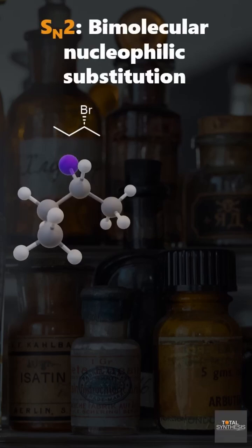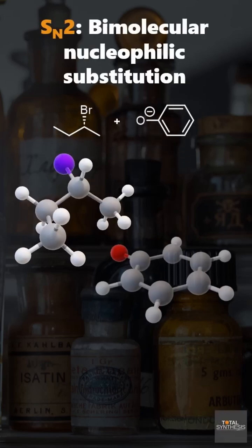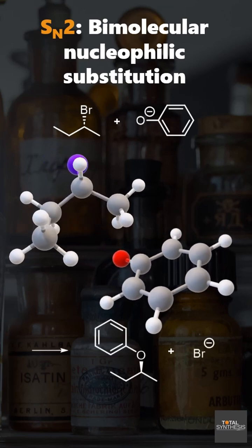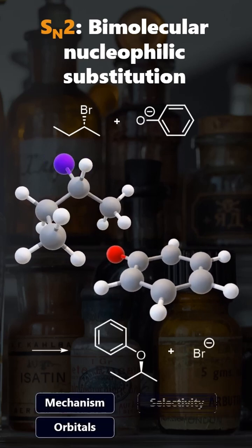Let's visualize the SN2 reaction mechanism to explain basic concepts like orbital selectivity and sterics before looking at a slightly more complicated case example.